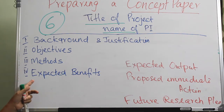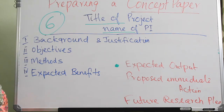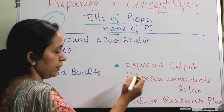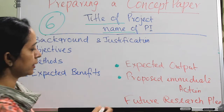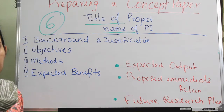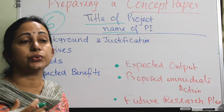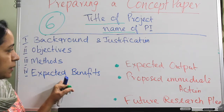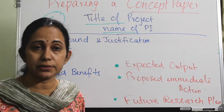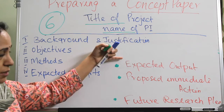The next section is expected benefits. Write the expected output that the study will generate, the timeline, and the proposed immediate action based on your output. Also include the ideas generated from the study and how they are going to affect future research plans.